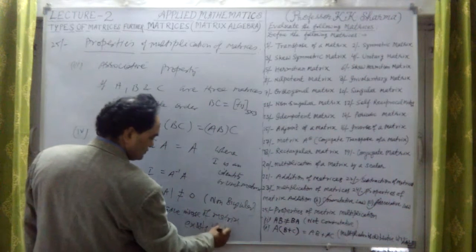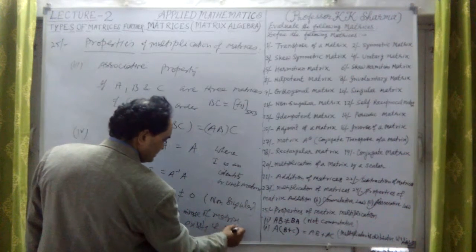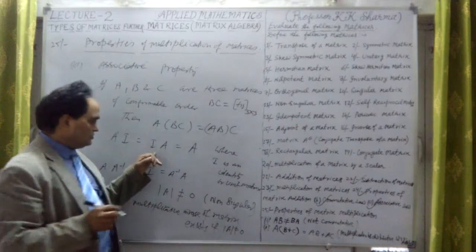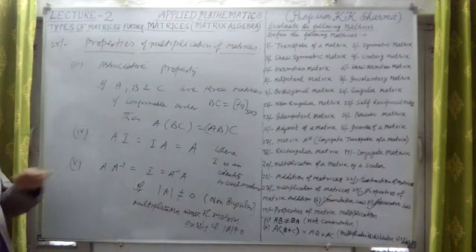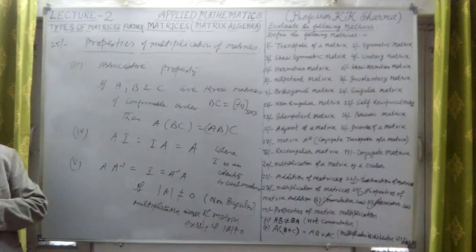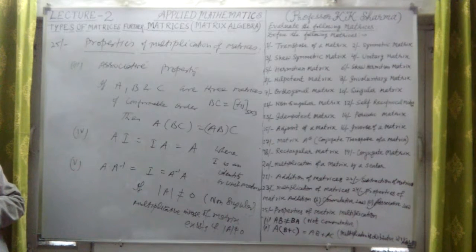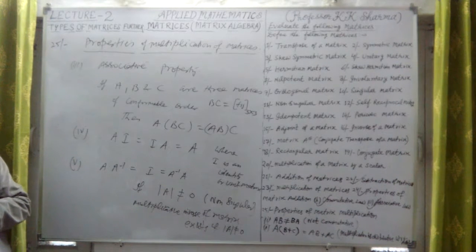The property we have taken: A times I equals I times A equals A, where I is the identity matrix. Because of the distributive property of matrix multiplication, matrix A on unit matrix is defined.